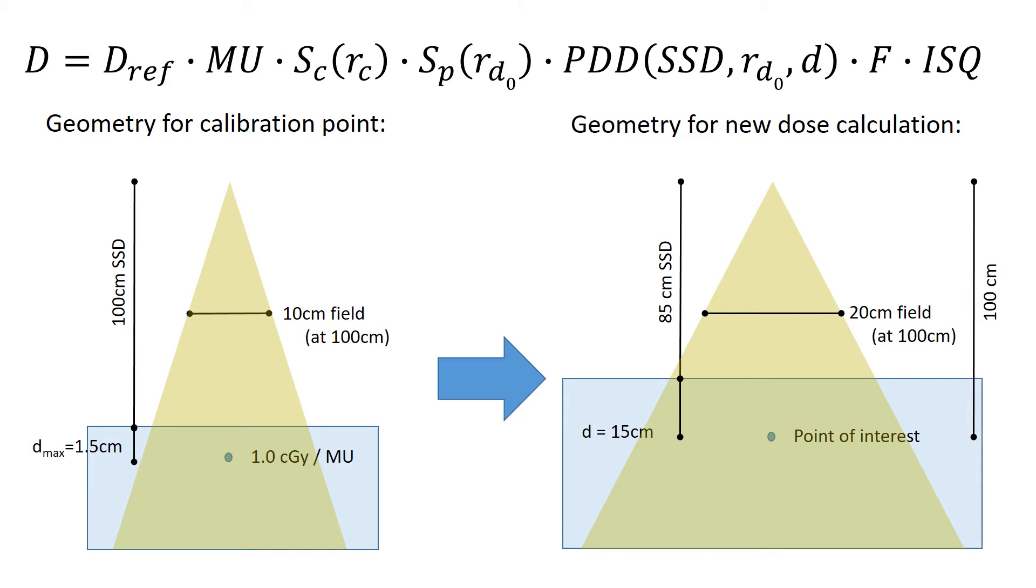We've simplified our equation by getting rid of some factors we don't need, and now we can look at the other factors that remain. And the first one I want to start with is actually the last factor here, this ISQ, or the inverse square correction.